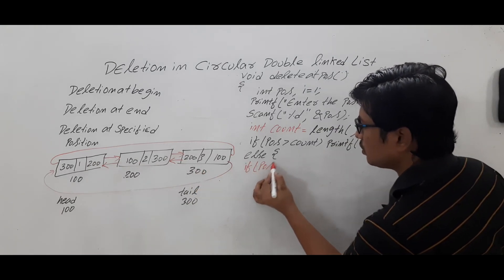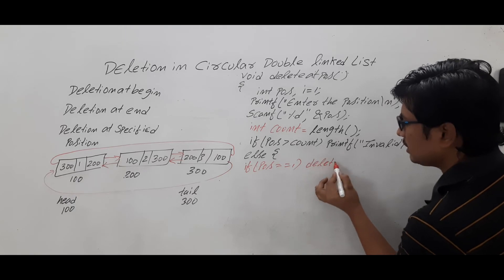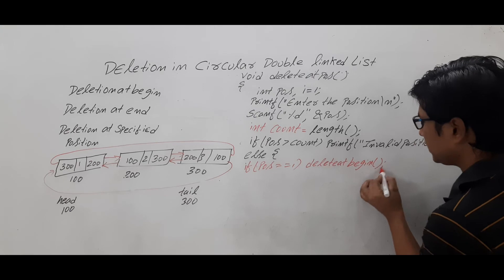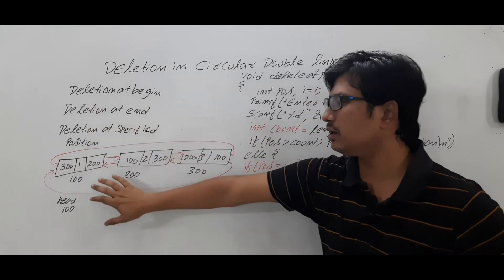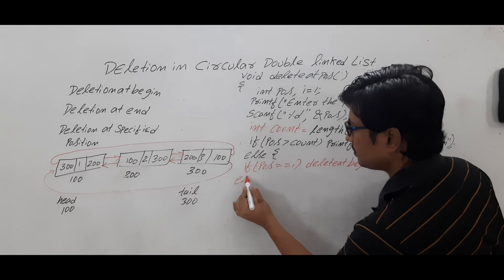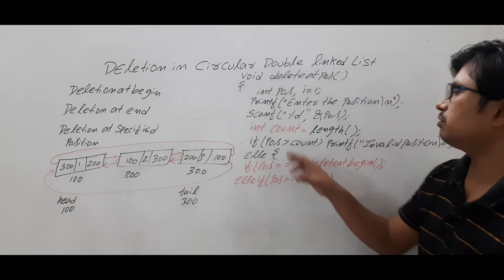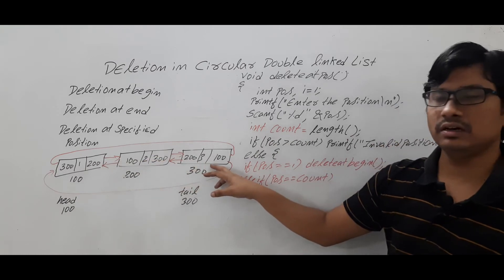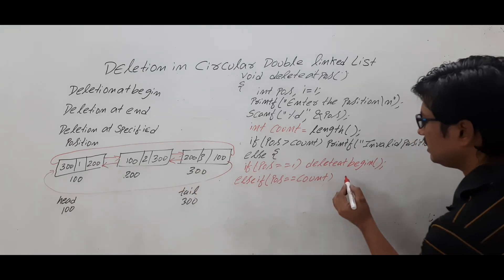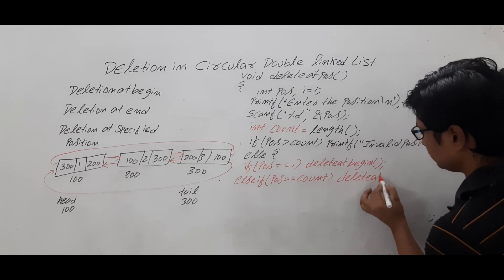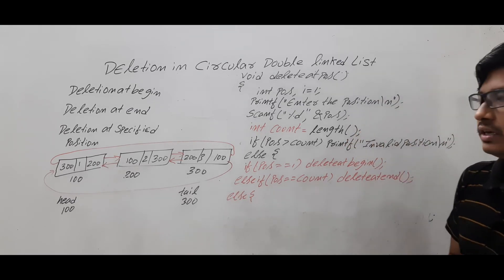If position equals 1, simply call delete_at_begin, since deleting the first node is handled by that function. If position equals count — for example 3 when there are three nodes — simply call delete_at_end, already discussed. These two cases reuse existing functions, making the code simple and modular.